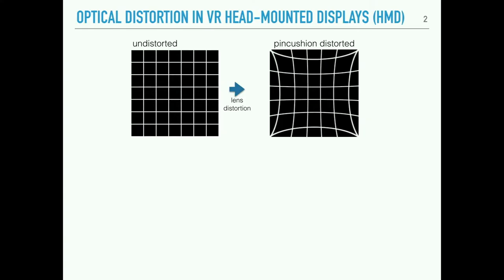Modern virtual reality head-mounted displays make use of powerful optics to focus the display that's placed mere centimeters from the observer's face. This has the effect of making the objects being shown appear at a greater distance from the viewer. But an unintended consequence of these high magnification lenses is that the magnification is non-uniform over the image, so what we get is a curvature distortion — specifically pincushion-type distortion.